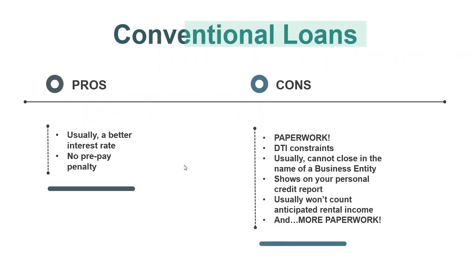Conventional loans — what are the pros? Usually a better rate and no prepayment penalty. What are the cons? A lot of paperwork, DTI constraints, and usually you can't close in a business entity like an LLC or corporation. It shows on your personal credit report, and lenders usually won't count anticipated rental income like DSCR loans will — because on DSCR we'll do a rental survey for vacant properties. You generally can't use that in your DTI on a conventional loan.